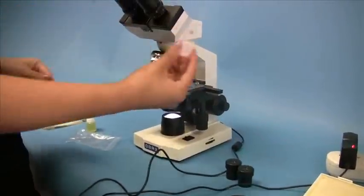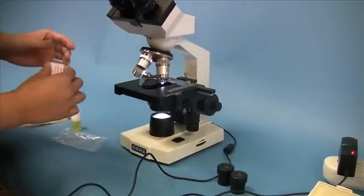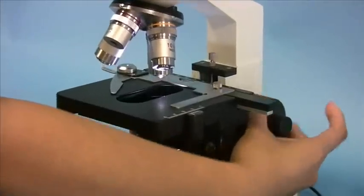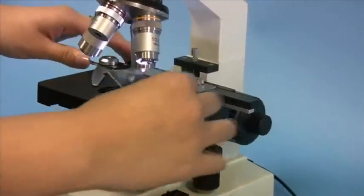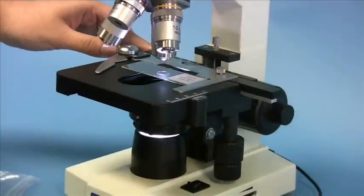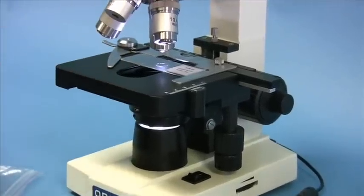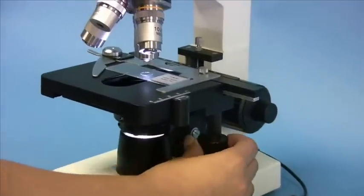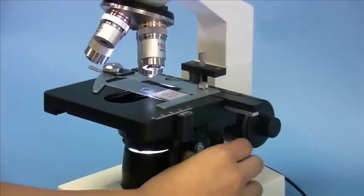So let's take a slide. In order to place it, first you want to lower the stage to its minimum height using the coarse focus adjustment knob. Place the slide on the stage and gently secure it using the slide holder. You want to make sure that the slide is placed right underneath the objective by using the x and y adjustment knob.